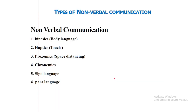Let's look at the types of nonverbal communication. Nonverbal communication can be through body language — that is called kinesics. It can be through touch — that is called haptics. Through space and distancing — that is called proxemics. Chronemics involves the role of time in the communication process. And it can also be through sign language and paralanguage. We will look at these six types one by one in detail.